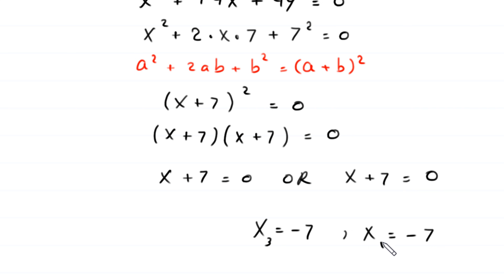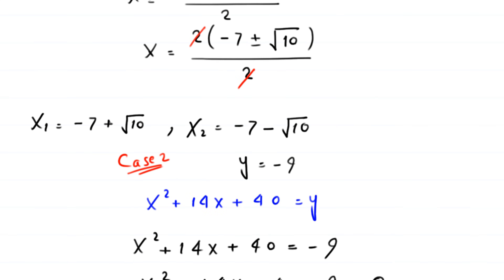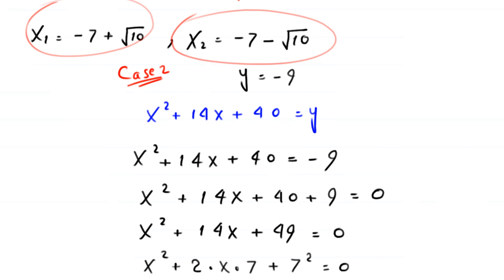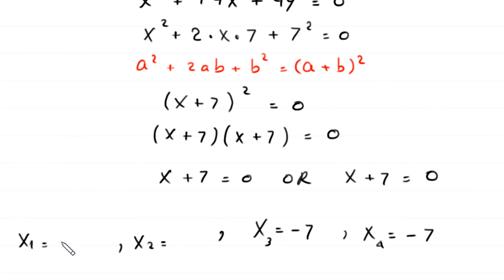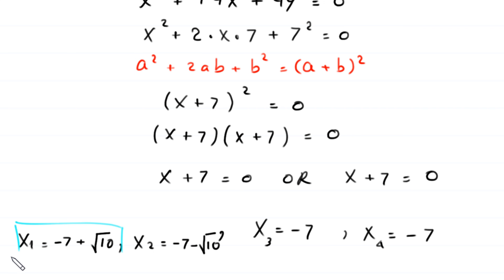This gives x₃ = −7 and x₄ = −7, a repeated root. So altogether we have four solutions: x₁ = −7+√10, x₂ = −7−√10, and x₃ = x₄ = −7.